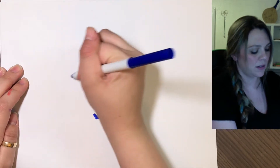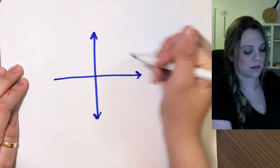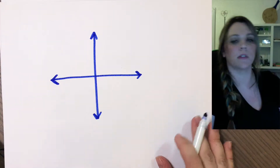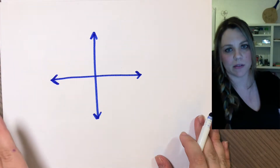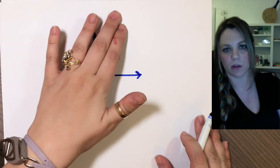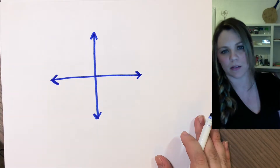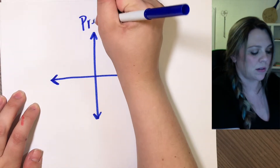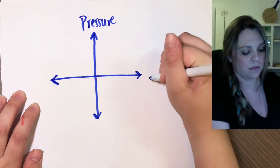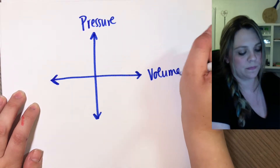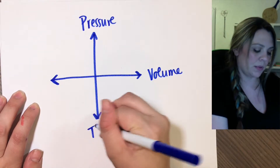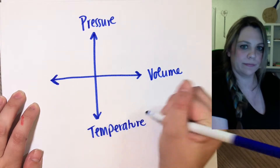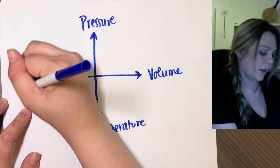The way I like to think about it is that they're all kind of interconnected. Think about it like a compass — it doesn't matter about any specific order — you have pressure, volume, temperature, and amount going around it.